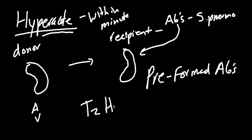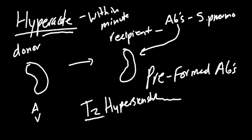Hyper acute rejection is a form of type II hypersensitivity. Type I hypersensitivity involved mast cells and IgE — allergic hypersensitivity. Type II is antibody-mediated, meaning antibodies directly attack without forming and depositing immune complexes. So hyper acute rejection is type II hypersensitivity.